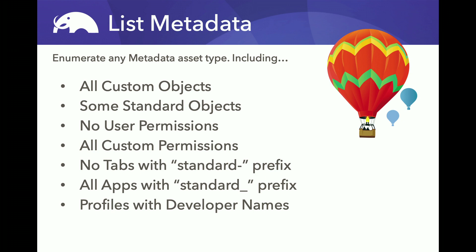Another thing: if you ask for user permissions, you can get all of the custom permissions in an org, but you can't get any of the user permissions — and we'll talk about user permissions more. If you think about permissions like manage all data, view all data, all those different permissions you can set in a profile, you can't get those from metadata list. Also, metadata list will give you some of your custom tabs, but custom tabs that have the standard prefix will not be returned. So you're not getting complete information about standard tabs that you might need to know about.